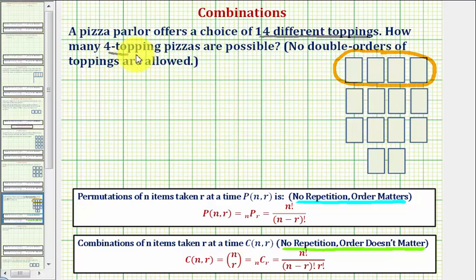And because we have 14 toppings and we'll be selecting four toppings at a time, the number of pizzas possible would be the number of combinations of 14 items chosen four at a time, or 14 choose four.